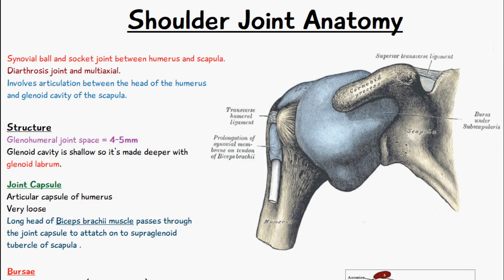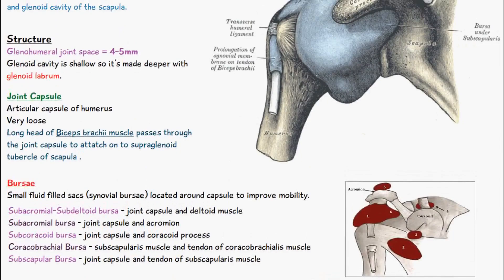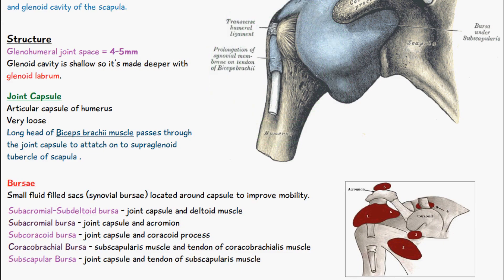The components of the shoulder joint consist of the joint capsule and bursae. The joint capsule is very loose, and the long head of the biceps brachii muscle will pass through it. The bursae are small fluid-filled sacs located around the capsule, and their purpose is to improve mobility and prevent friction.